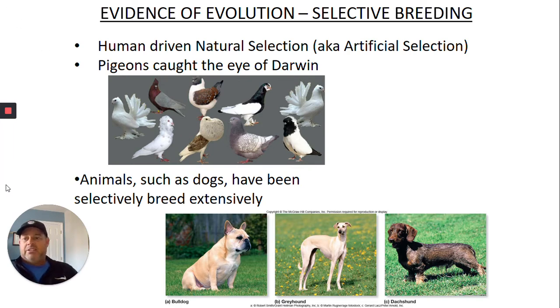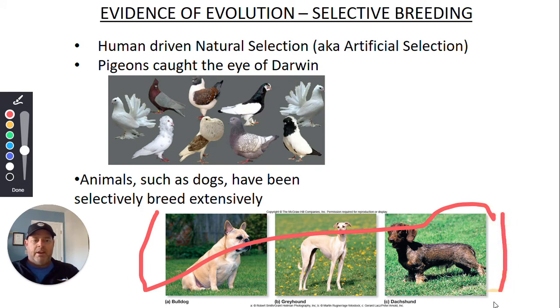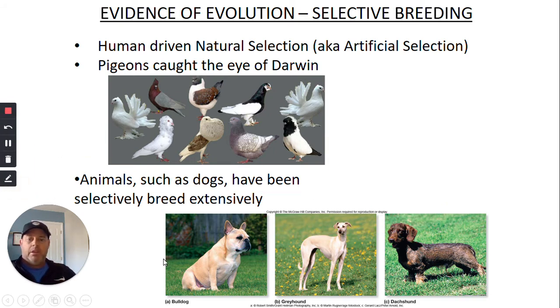Next term up here is selective breeding. So this guy right here, selective breeding, kind of what it sounds like. Another word for it would be like artificial selection rather than natural selection. Because this is human driven. This is human driven natural selection, right? So it's us forcing natural selection to happen. And if you look down at the example, down here at the bottom with the dog breeds, we do this all the time with our dog breeds.